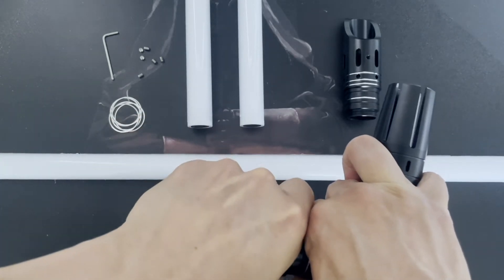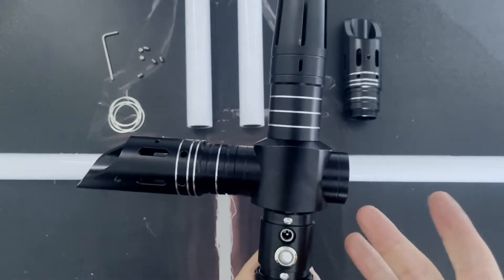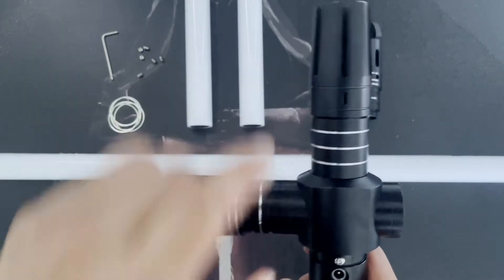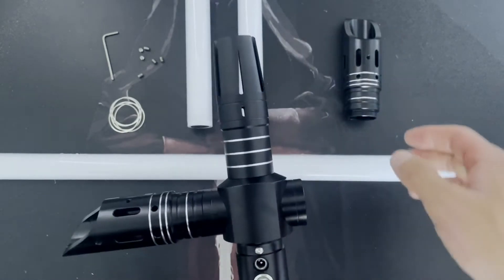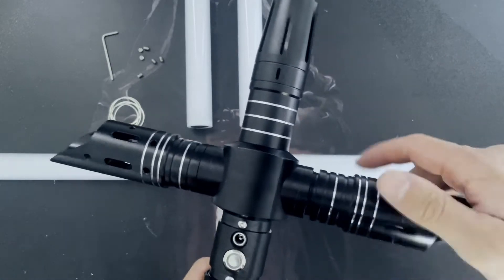So what you want to do as you're putting this on is maybe just hold this section, and then twist. Now I feel that pinching, so that's fairly tight now. I don't need to go more than that. I don't want to carry on twisting now from this bit here because it will start to twist this housing unit.